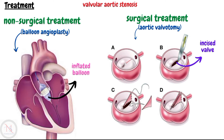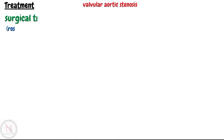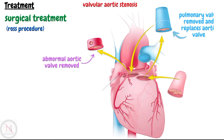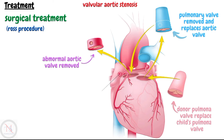Alternatively, the Ross procedure can be carried out. In a Ross procedure, the surgeon removes the abnormal aortic valve and replaces it with the child's own pulmonary valve. A valve from a cadaver or donor is then used to replace the child's pulmonary valve.